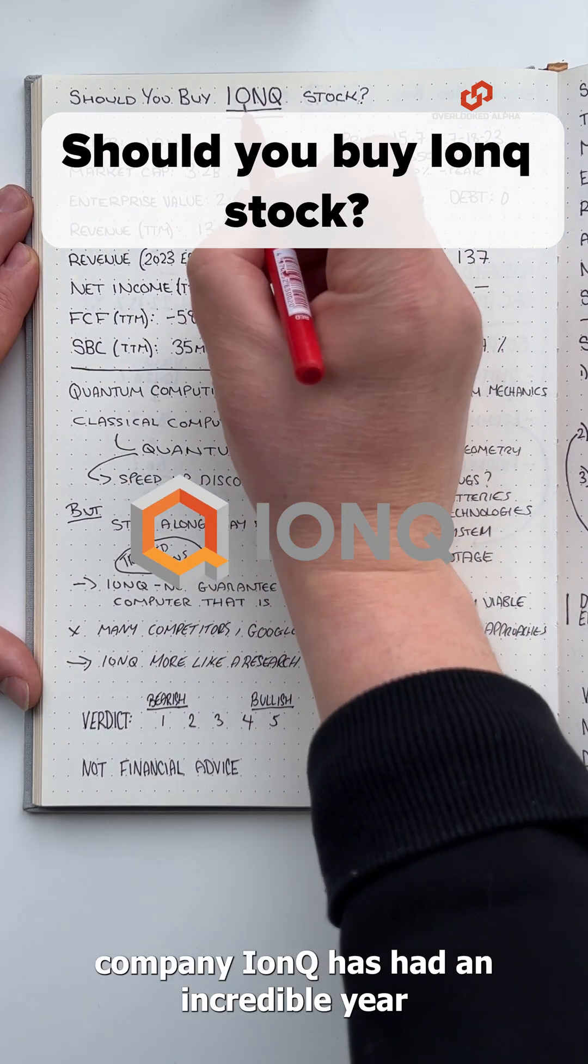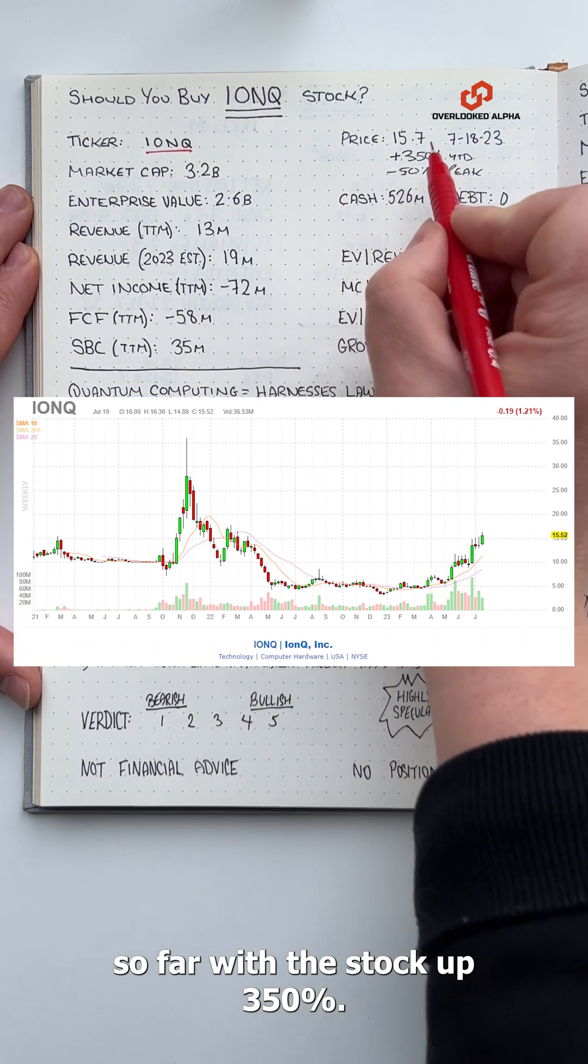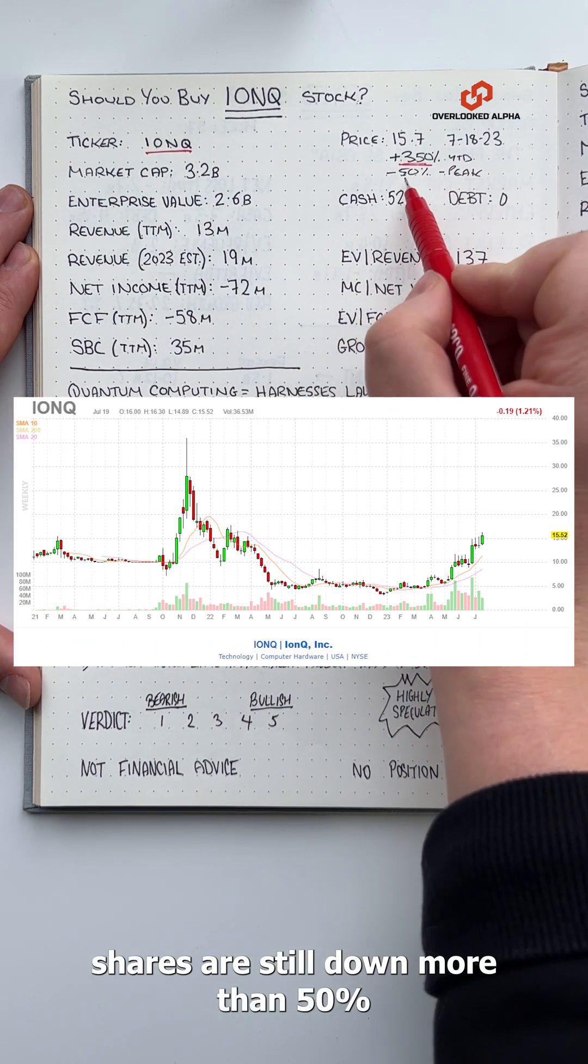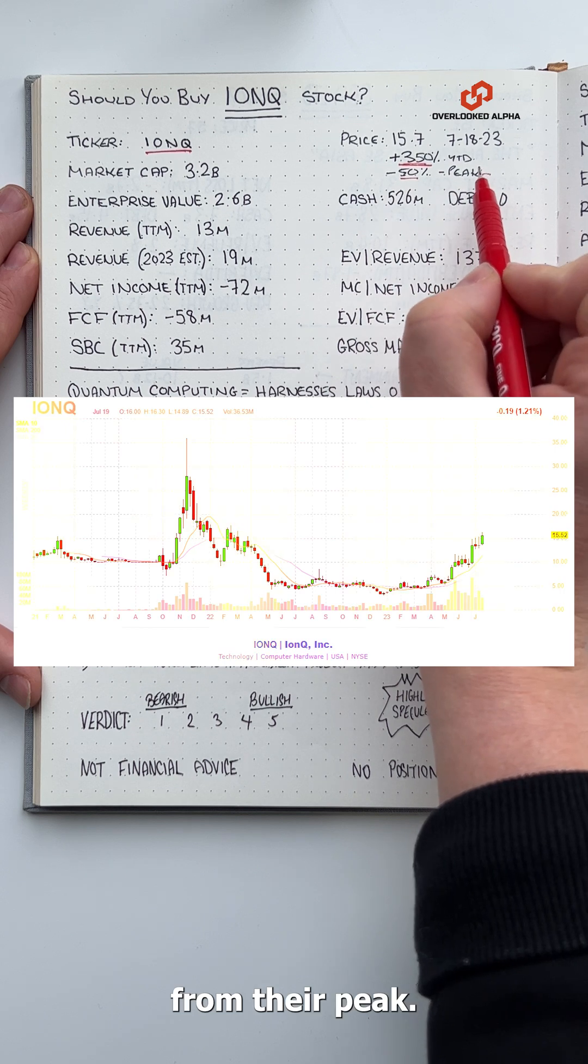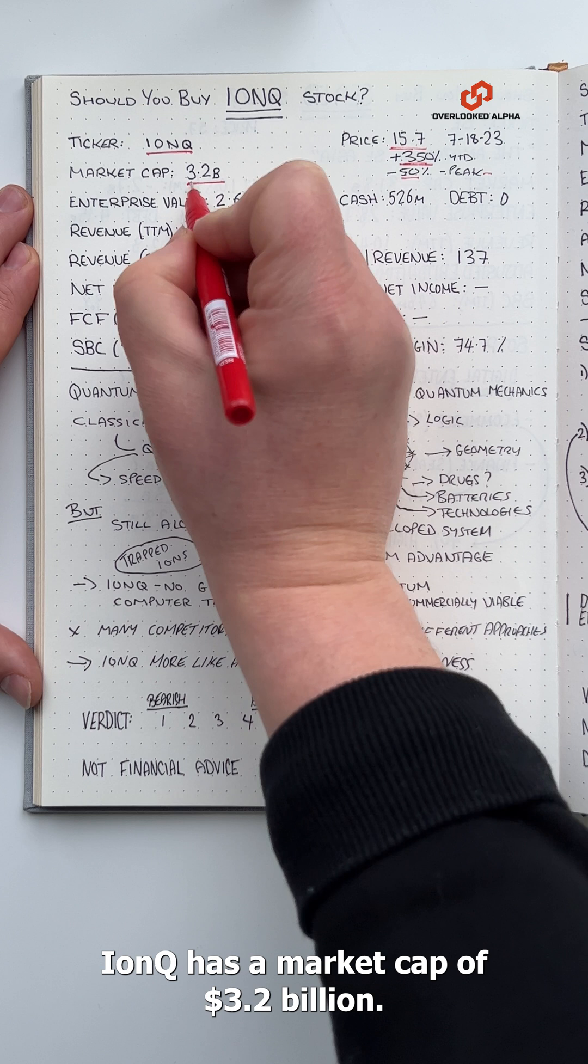Quantum computing company IonQ has had an incredible year so far with the stock up 350%. Despite that, shares are still down more than 50% from their peak. At the latest share price, IonQ has a market cap of $3.2 billion.